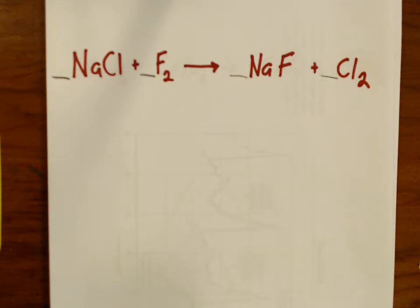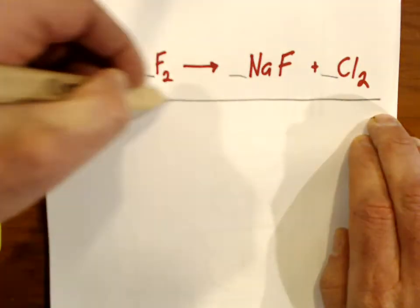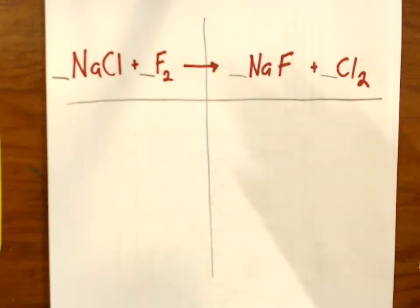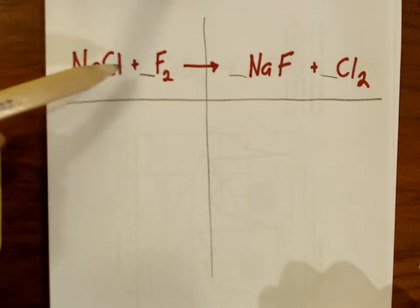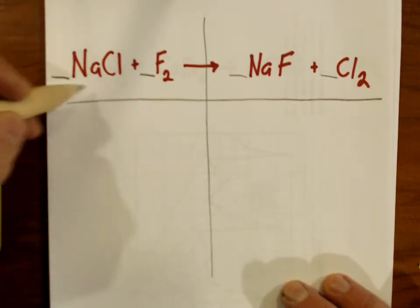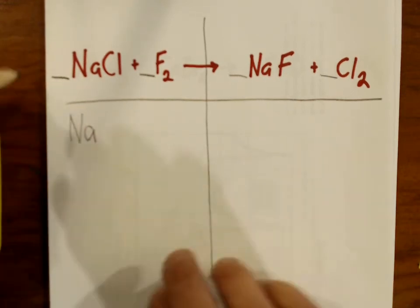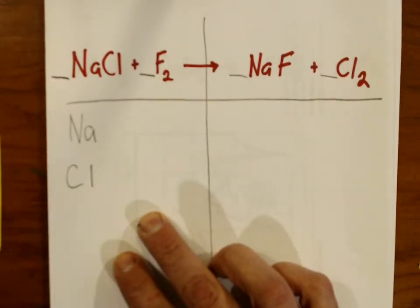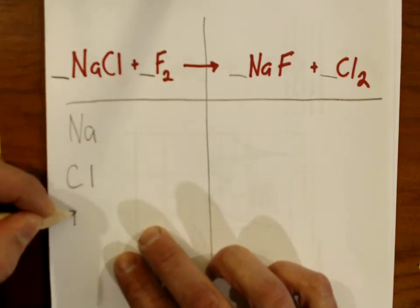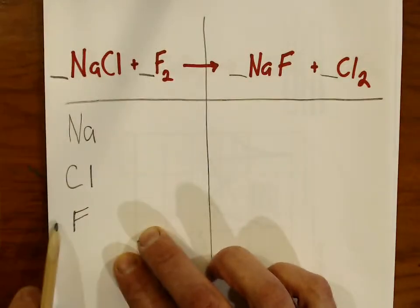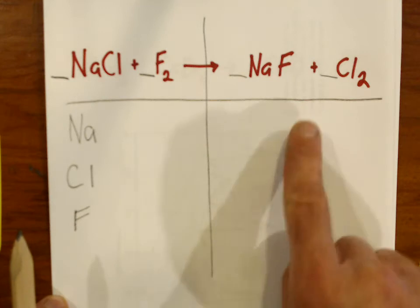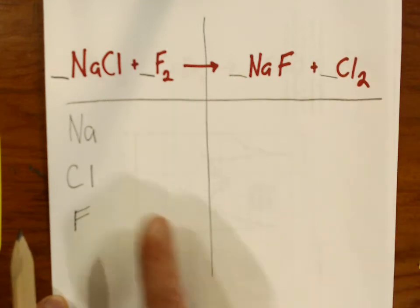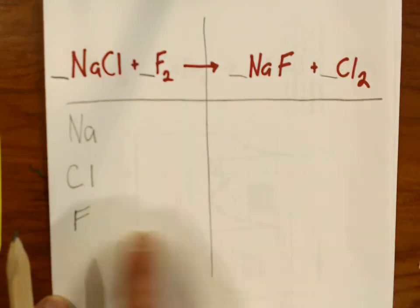The overall strategy to use when balancing a chemical equation is what we call atom inventory. A good idea is to draw a big line underneath the whole thing and put a big line right down the center. Here on the reactant side, let's make a list of the elements that appear. We have sodium — I'm going to write down Na. We got some chlorine — Cl. Then we have fluorine — F. Now on the other side of the equation we do have the same exact elements, and I'm going to write the exact same list there.